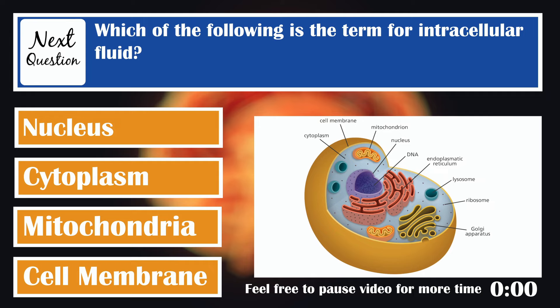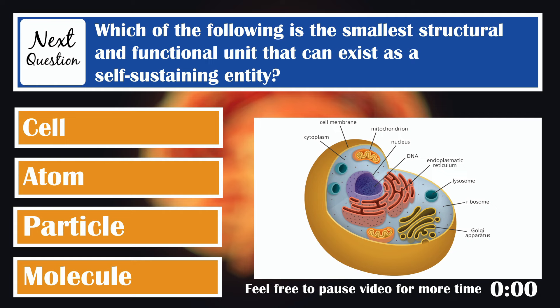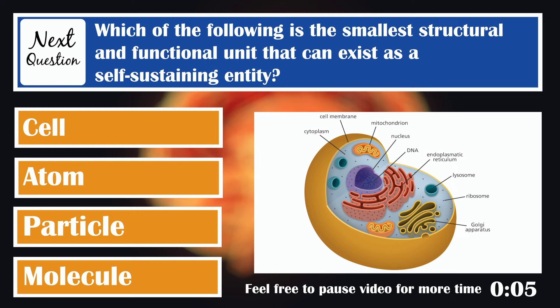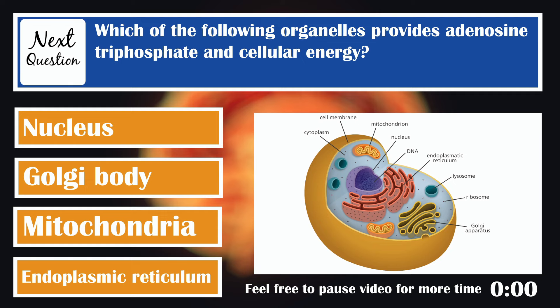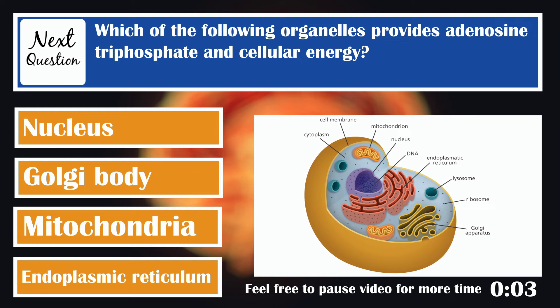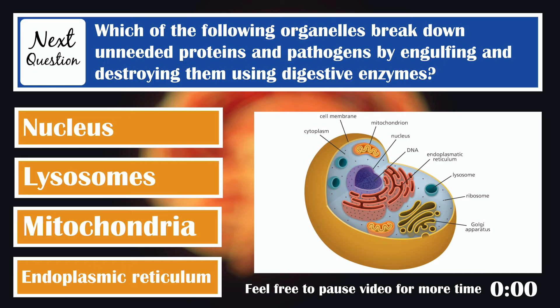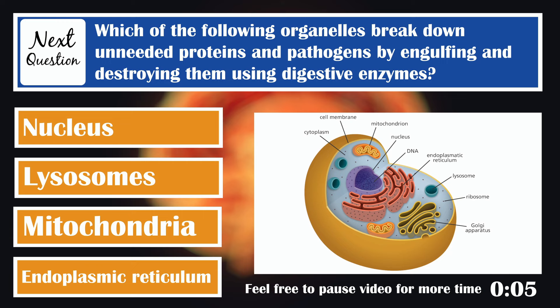Which of the following is the term for intracellular fluid? Cytoplasm. Which of the following is the smallest structural and functional unit that can exist as a self-sustaining entity? The cell is the smallest structural and functional unit that can exist as a self-sustaining entity. Which of the following organelles provides adenosine triphosphate and cellular energy? Mitochondria are the power cells. Which of the following organelles breaks down unneeded proteins and pathogens using digestive enzymes? Lysosomes — the cell's janitors or garbage disposals.